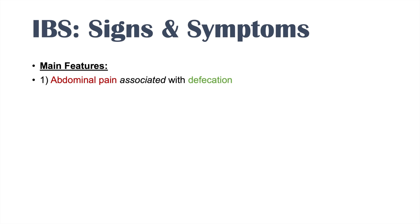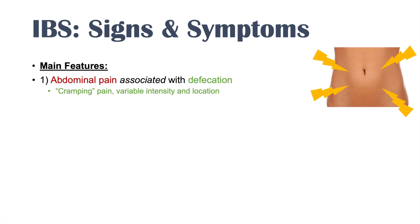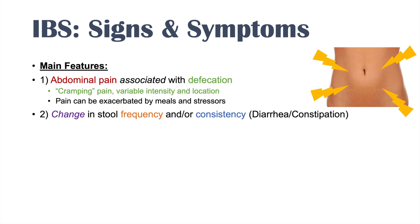The main features of IBS include abdominal pain associated with defecation. This pain is described as cramping in nature and can be variable in intensity and location — any intensity of pain can occur in any abdominal location. The pain is generally exacerbated by meals and stressors. The second main feature is a change in stool frequency and/or consistency, which can be diarrhea and/or constipation.